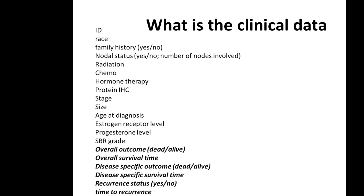So what is clinical data? Clinical data is a set of information about the patient and his or her disease. It usually includes parameters such as race, family history of cancer, nodal status — whether cancer has spread to regional lymph nodes — presence of treatment such as radiotherapy, chemotherapy, or hormonal therapy, results of staining for important proteins like hormonal receptors, tumor size, and tumor stage.